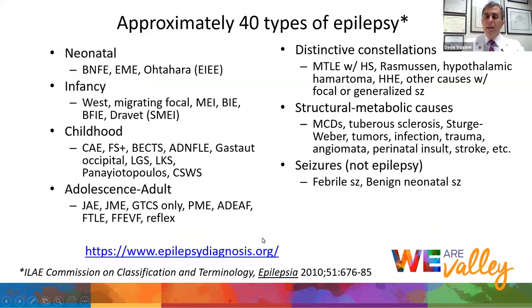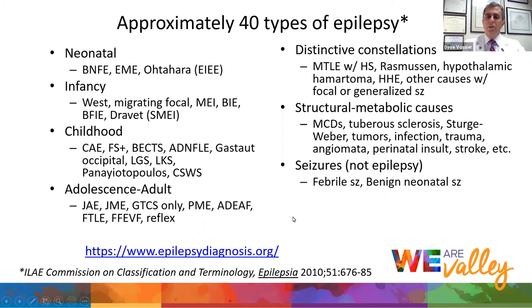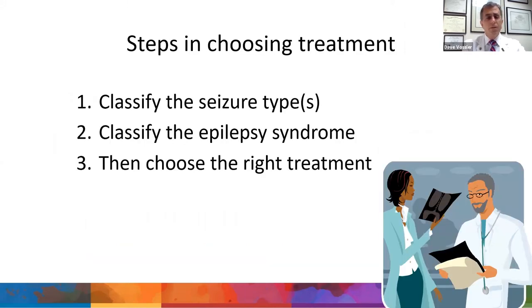There are 40 kinds of epilepsy — it's very complicated. Some neurologists like myself have gone on and done epilepsy fellowships. Medical school, internship, and residency takes about eight years, then some of us tack on an additional one to two years specifically in epilepsy. Those doctors have to be able to distinguish these different types of epilepsy. You don't have to — so don't worry. There's no test at the end.